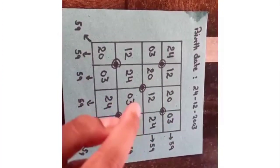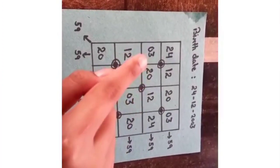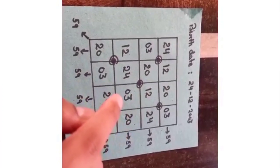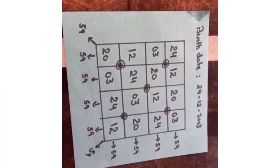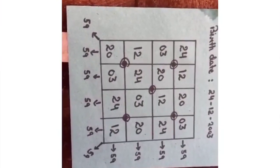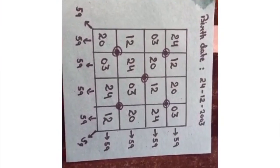And the mid four boxes, that is 20, 12, 0, 3 and 24 all sum to 59. Now, I'll tell you how I have made this. Let's see that.